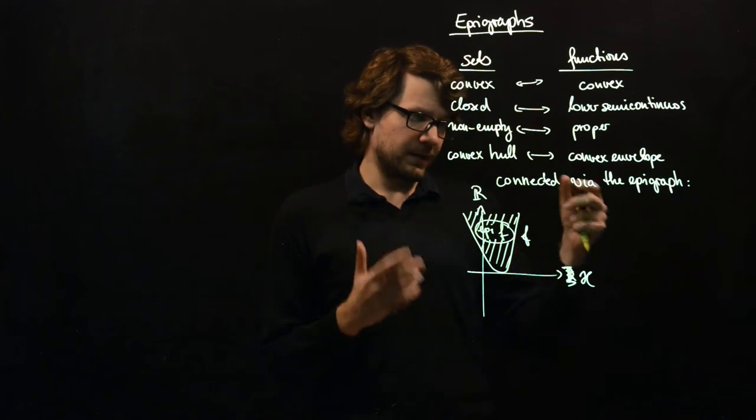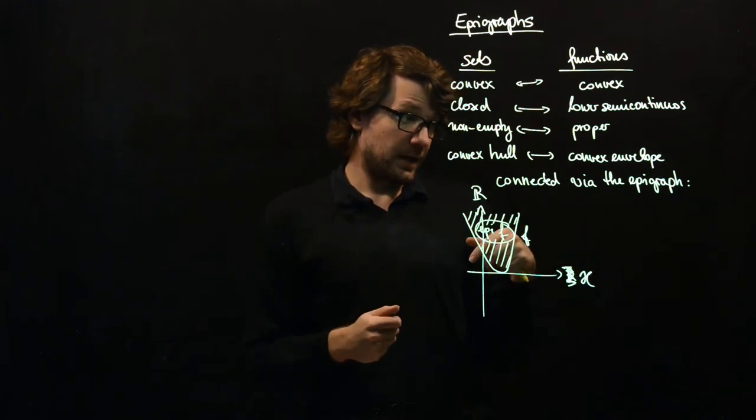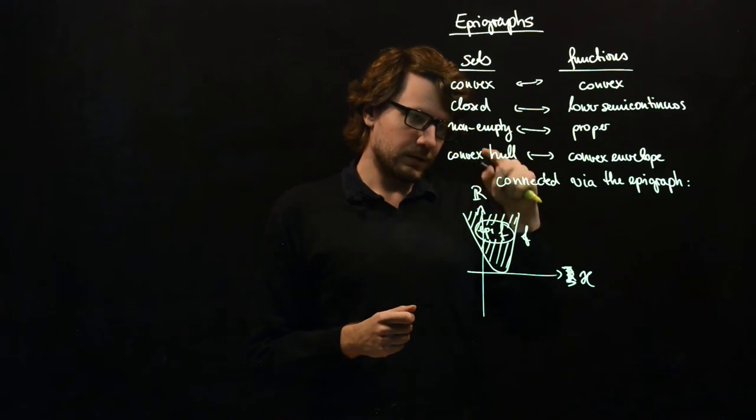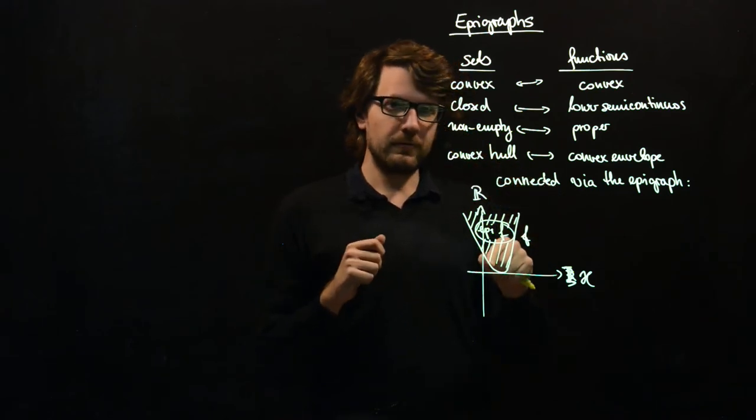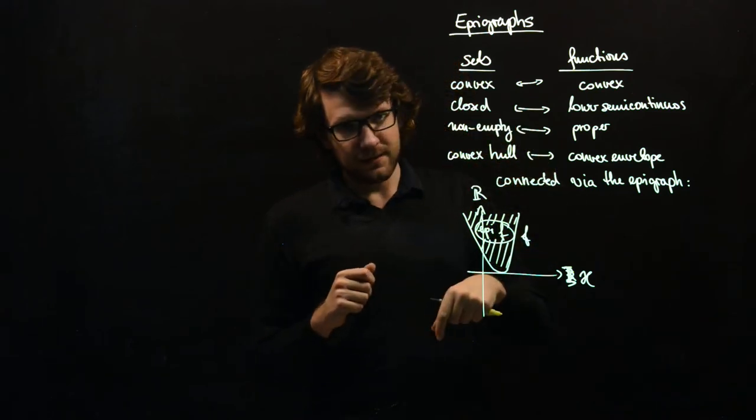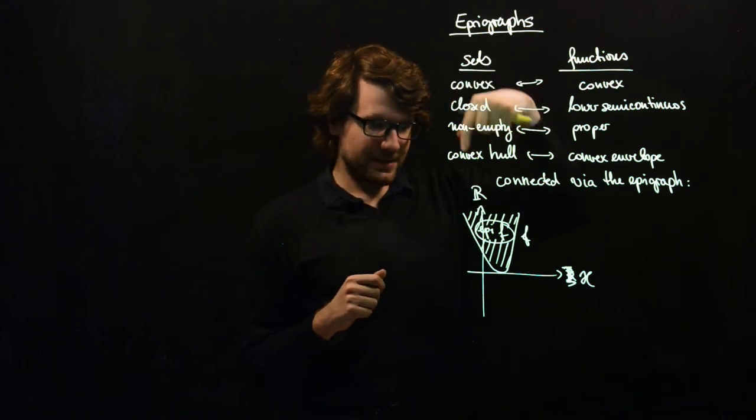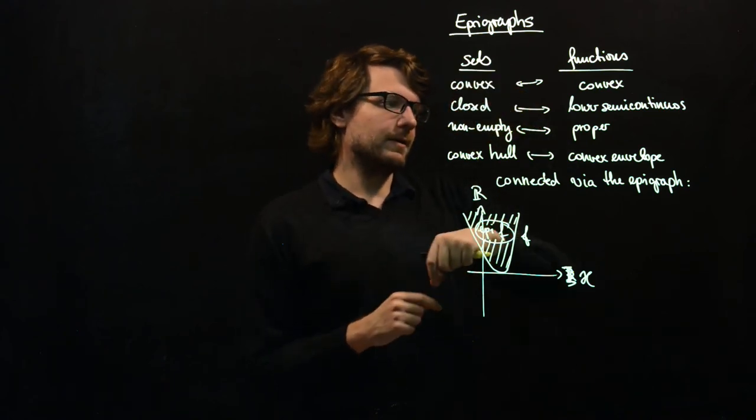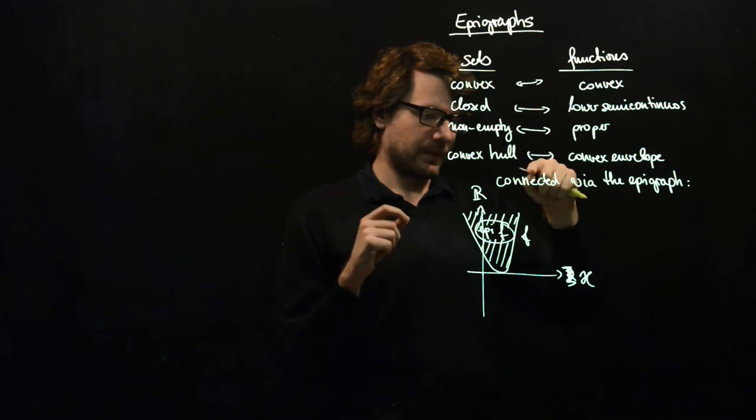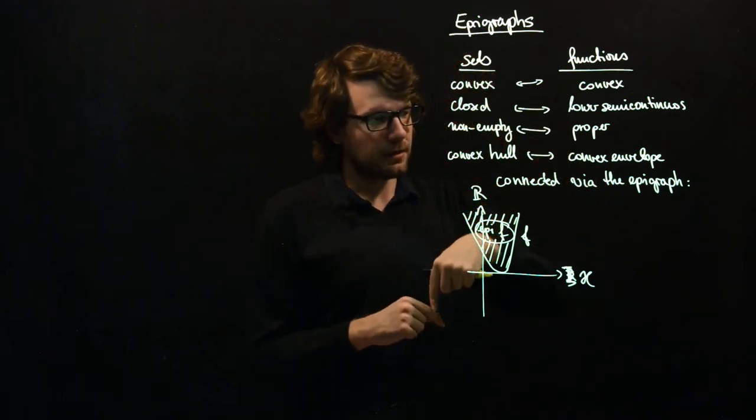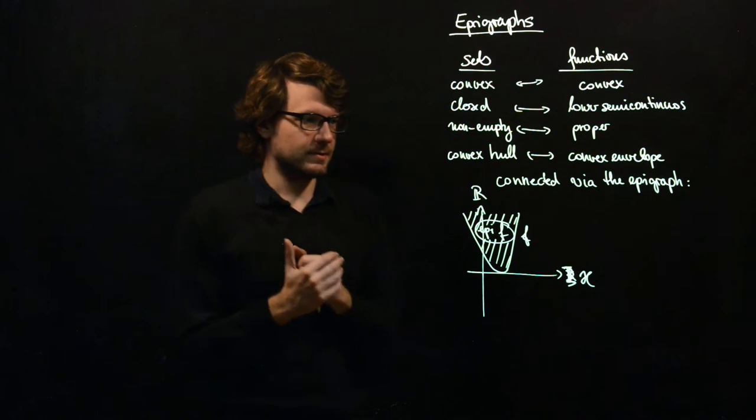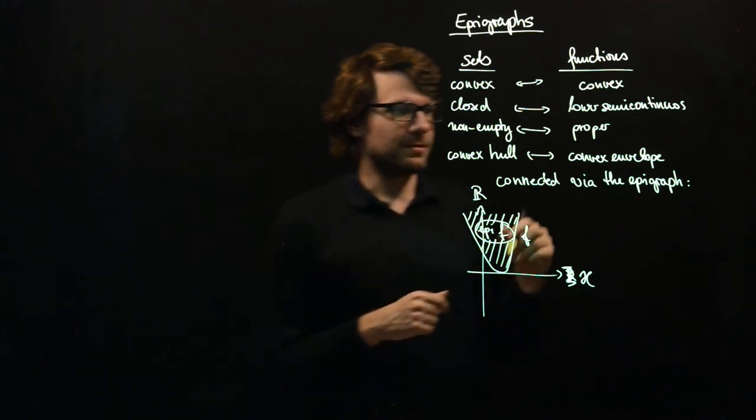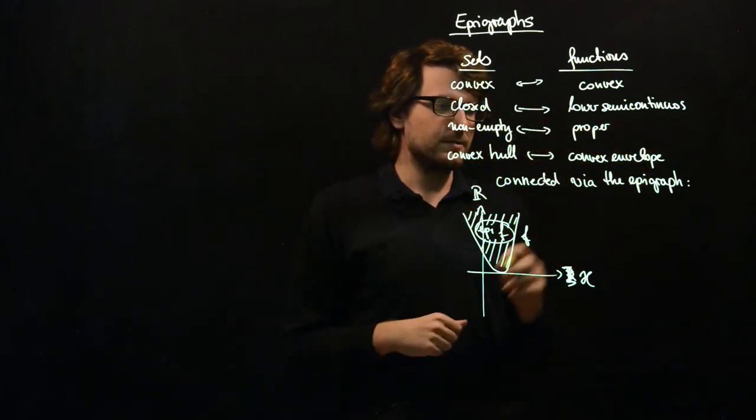And the convex hull and the convex envelope, they are also connected. So if you take a function, an arbitrary function, and you take the convex hull of the epigraph and then take the, for each x, you take the infimum of the convex hull of the epigraph, then you get the convex envelope. So here these things are not so clear.